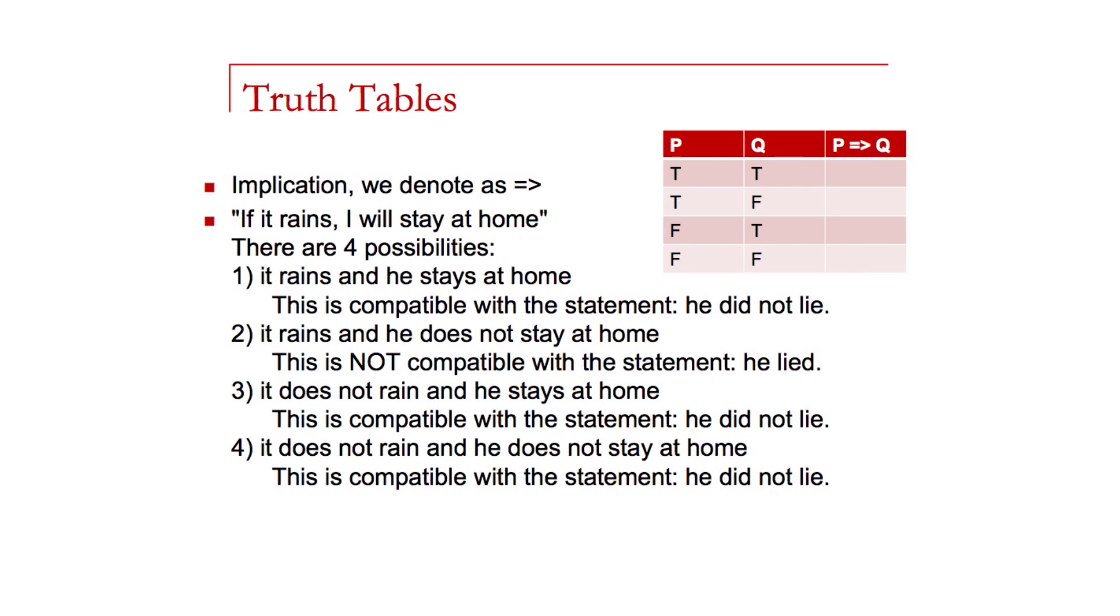The other two are interesting cases. It doesn't rain and I stay home. Well, the original statement does not say anything about what I do if it doesn't rain. So the original statement only talks about when it does rain or the true value of it raining and me staying home. For statements three and four, it doesn't discuss at all what happens when it doesn't rain. I can either stay at home or I can go outside.